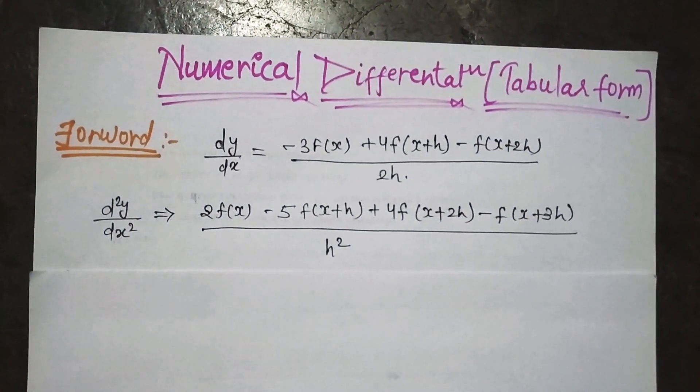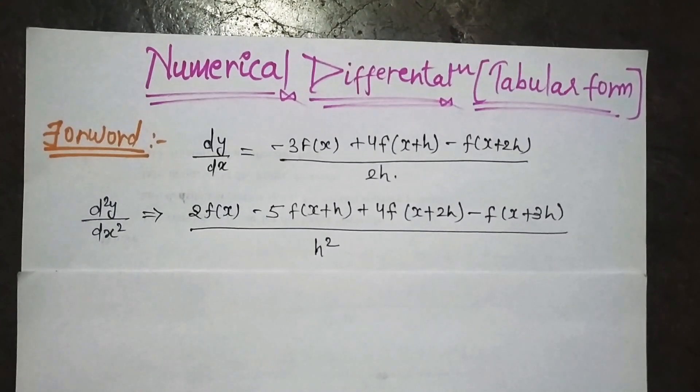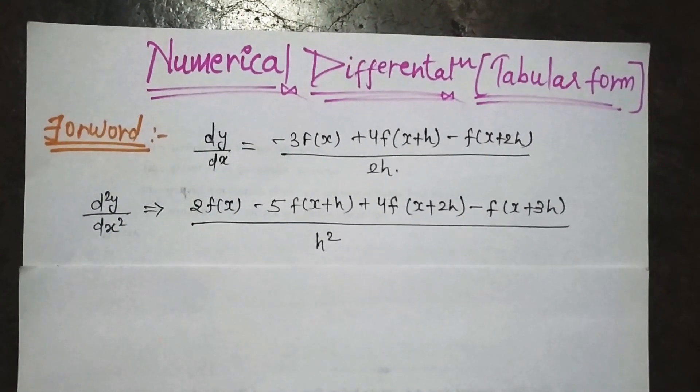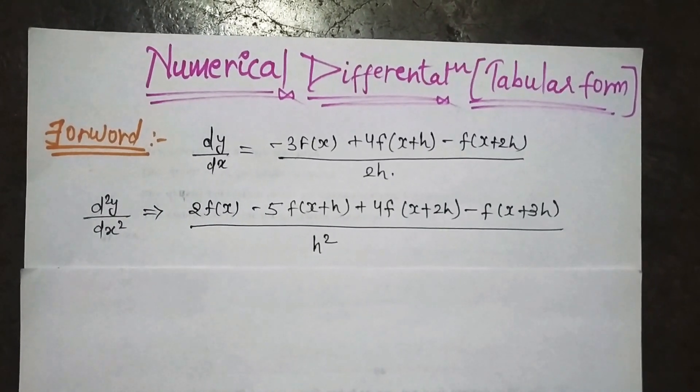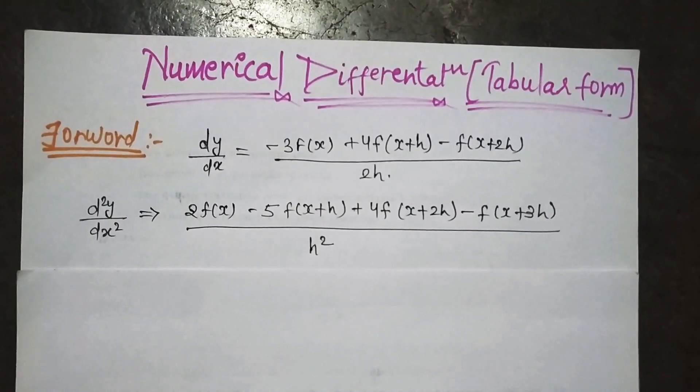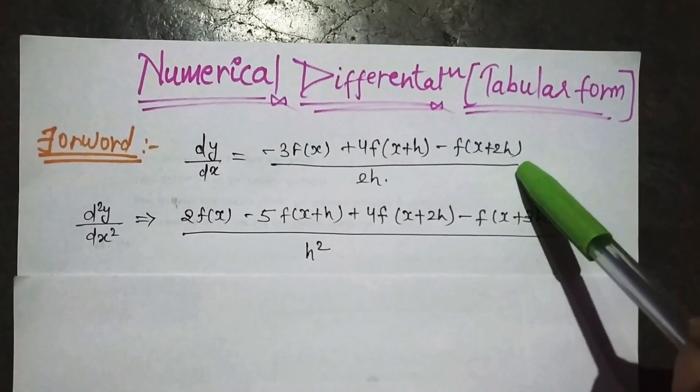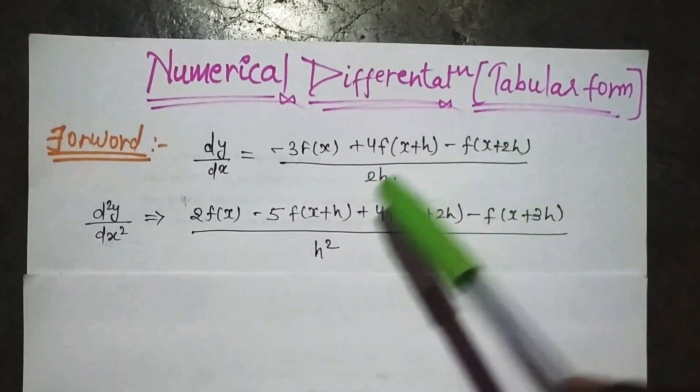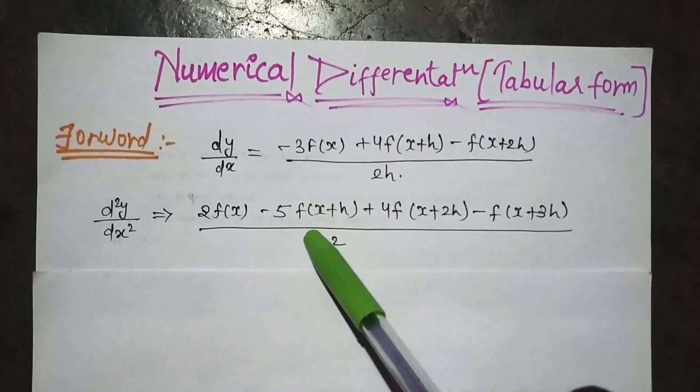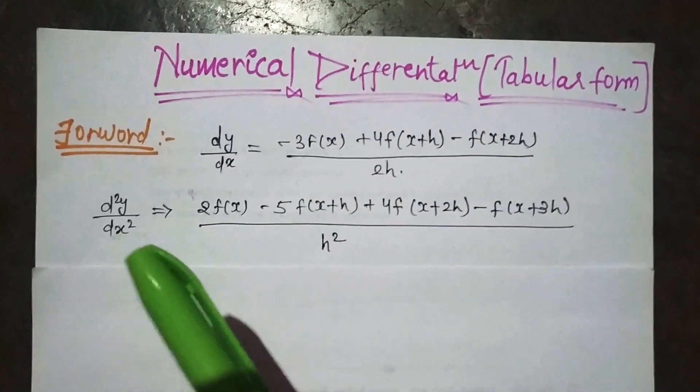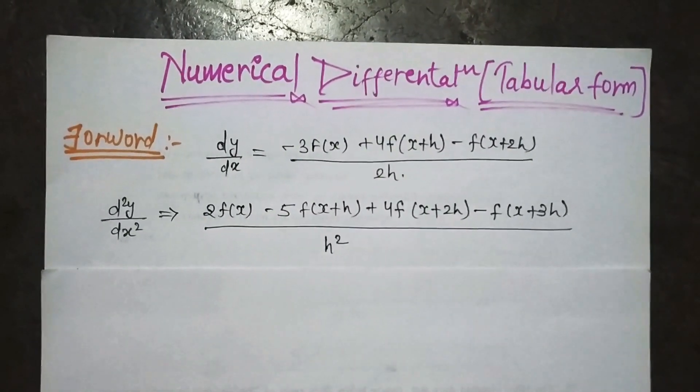There are three: backward, central and forward. I will solve the three formulas in this video. We have two formulas in numerical differentiation. First is for first derivative, and second is for second derivative. First derivative, first order. This is for the second order. This is a formula and you will remember the formula.